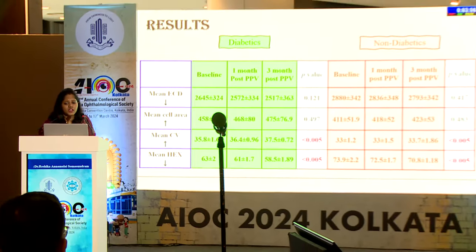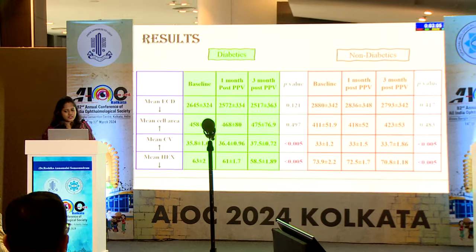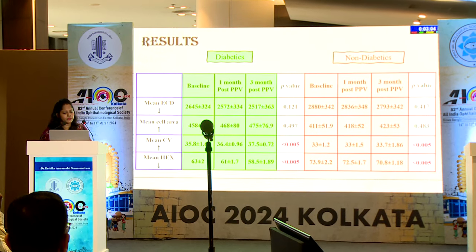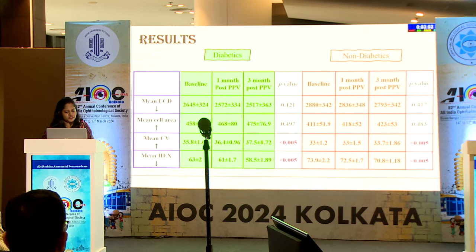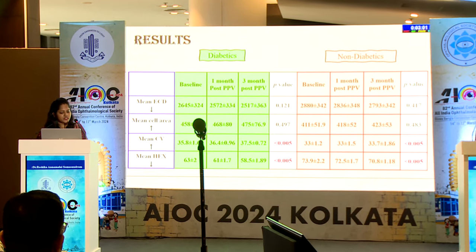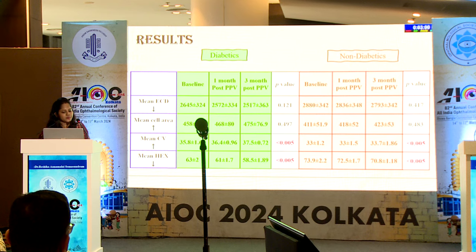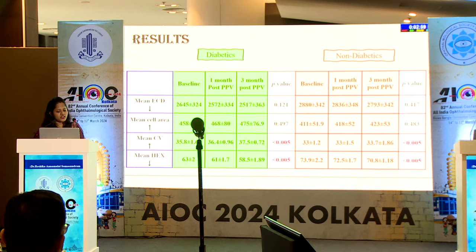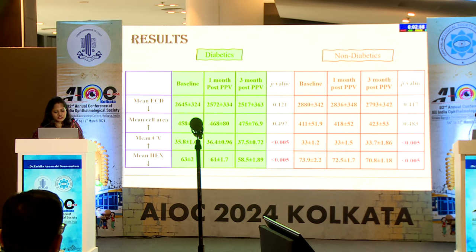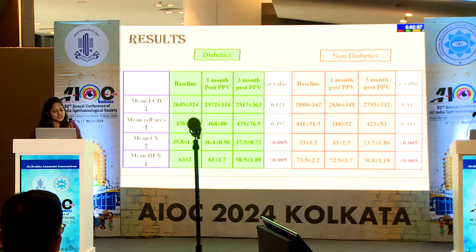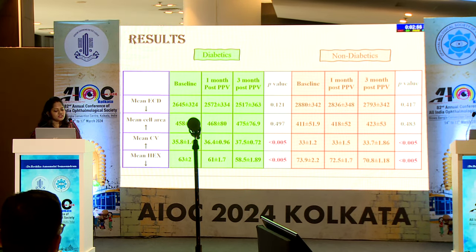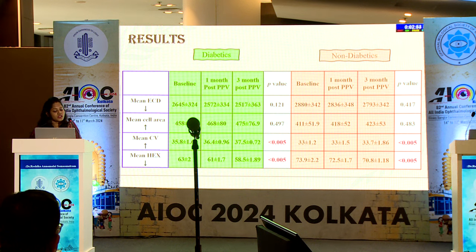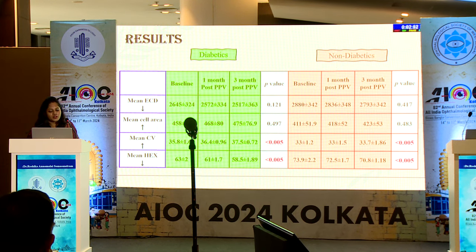Results: In both diabetics and non-diabetics, from baseline to 3 months post-op, there was a reduction in cell density and mean cell area, and it was not statistically significant. However, rise in coefficient of variation and fall in hexagonality was observed in both groups and it was statistically significant.